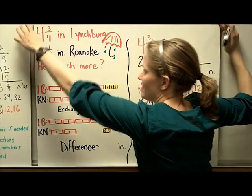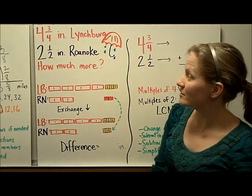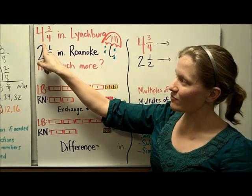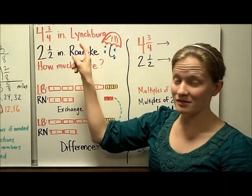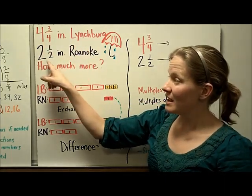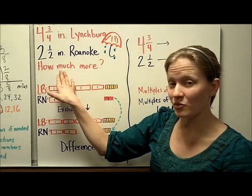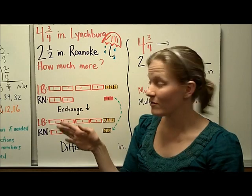So let's do another example of adding mixed numbers. Actually, subtracting mixed numbers. We have, in one month, it rained 4 3/4 inches in Lynchburg, and in the same month, it rained 2 1/2 inches in Roanoke. And we want to know how much more rain did Lynchburg get than Roanoke.